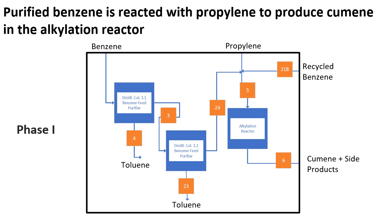Phase 1 of our process involves the purification of benzene. 95% benzene goes through two distillation columns which separate out toluene. Toluene must be separated from benzene due to a feed concentration limit of 1,000 parts per million toluene for the alkylation reactor. The purified benzene mixes with recycled benzene as well as fresh 92% propylene to react inside of the alkylation reactor and produce cumene plus side products.